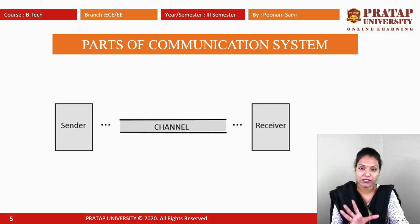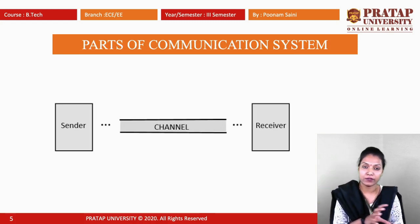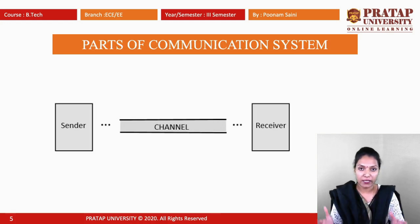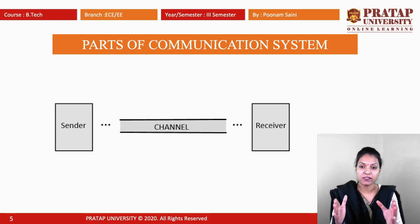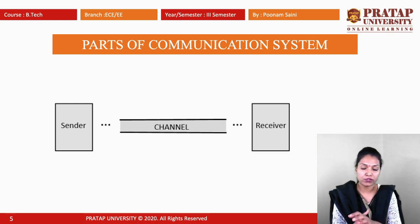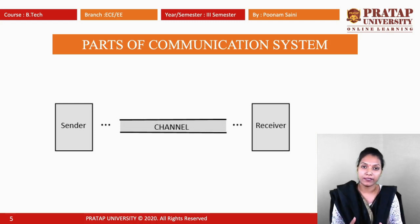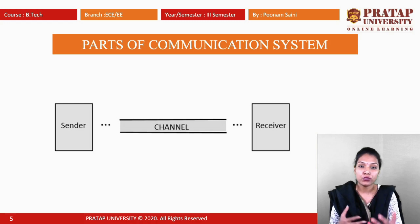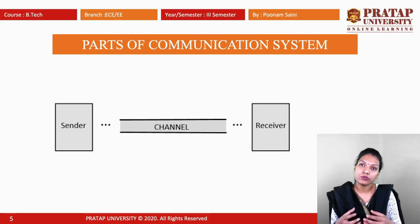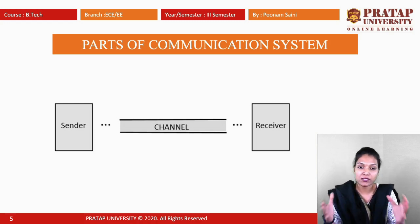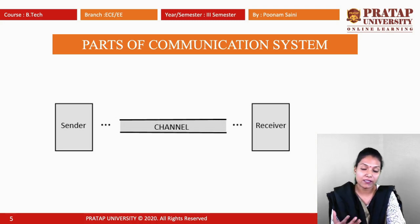The parts of a communication system are: sender, channel, and receiver. For example, I am the sender, this online presentation is the channel, and the students are the receivers who use this channel to study. So this is the communication between me and you — I am the sender, the presentation is the channel, and you are the receiver.